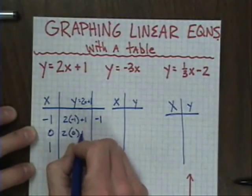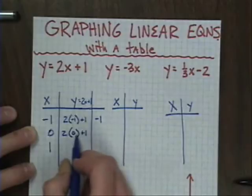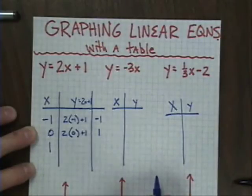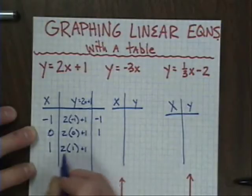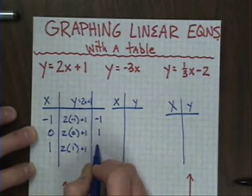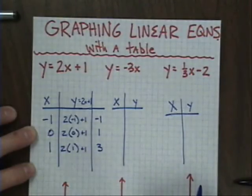If I did the same thing with a 0, 2 times 0 is 0, plus 1 is a positive 1. And finally, 2 times 1, plus 1, there's a 2, plus 1 more is 3 more. And we'll come to the graph here momentarily.